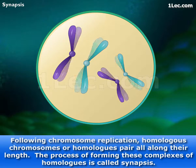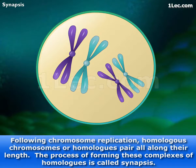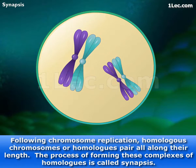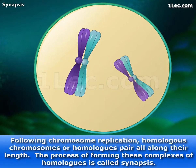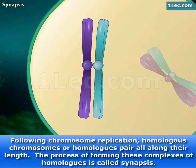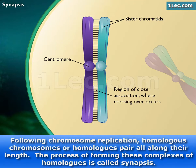Following chromosome replication, homologous chromosomes, or homologues, pair all along their length. The process of forming these complexes of homologues is called synapsis.